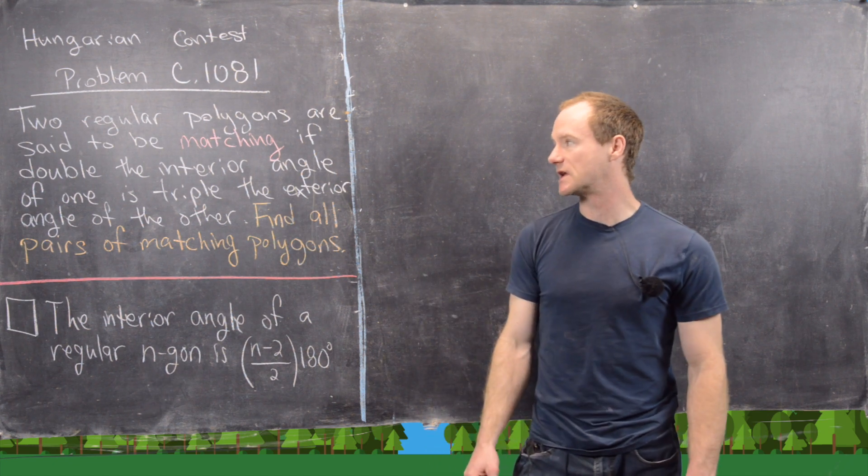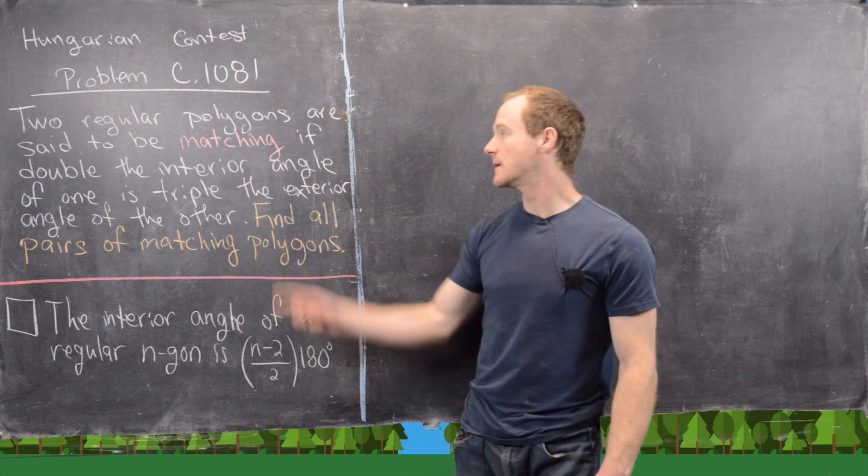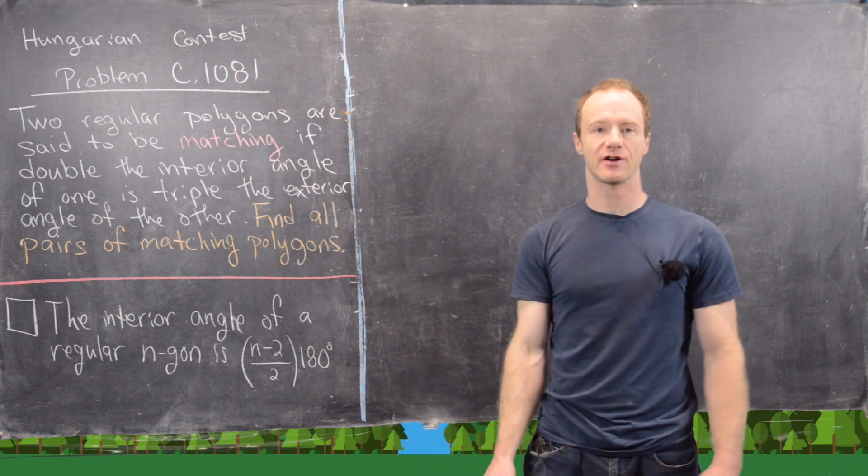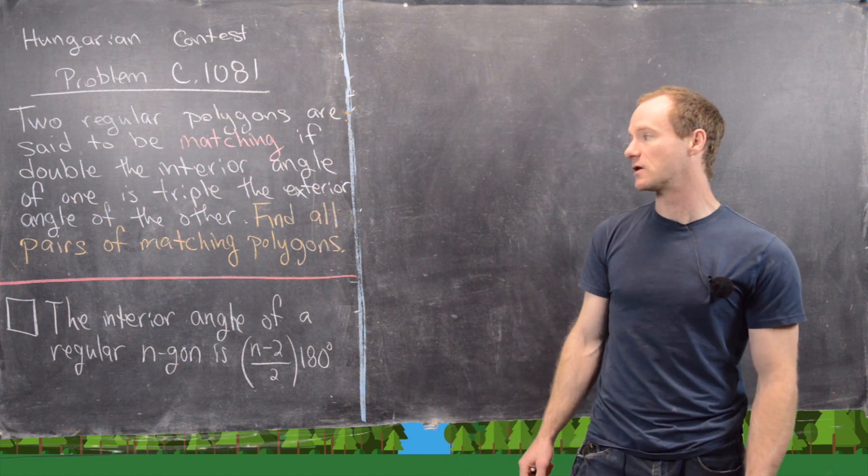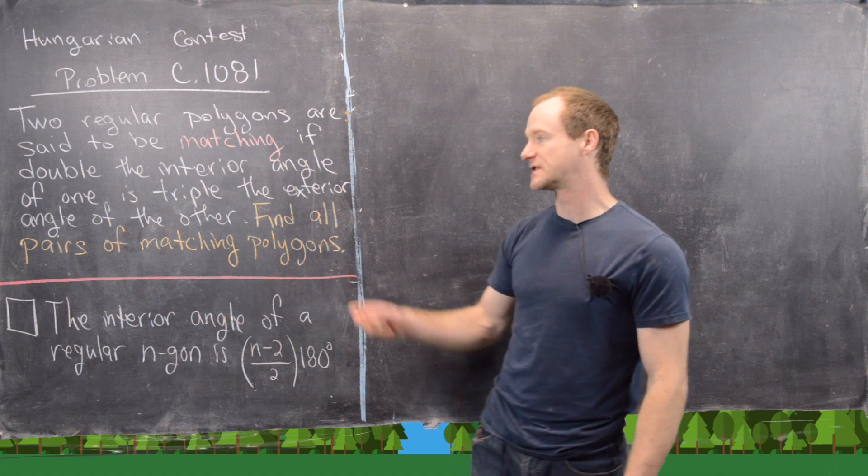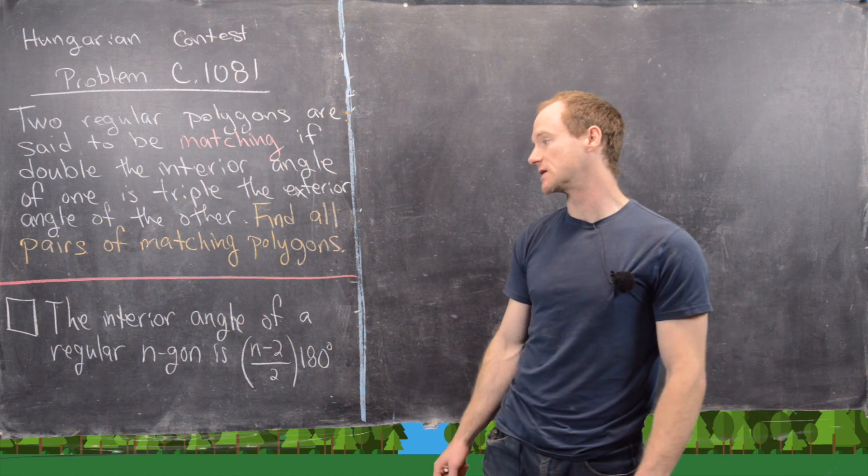So the problem reads as follows: Two regular polygons are said to be matching if double the interior angle of one is equal to triple the exterior angle of the other. And our goal is to find all pairs of matching polygons.